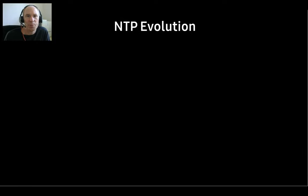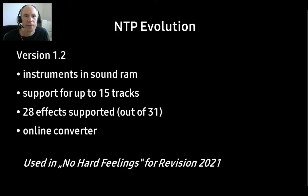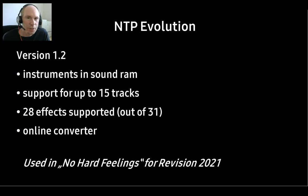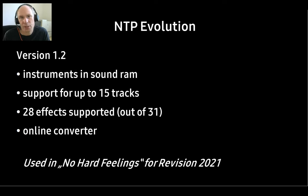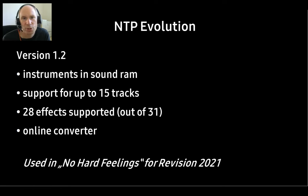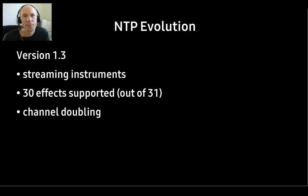Over the years, NTP changed quite a bit. Version 1.0 and 1.1 were the initial release and the bug-fixed version. 1.2 is what we used in our No Hard Feelings demo from 2021. Instruments could only be placed in sound RAM, which was good enough at the time, and it supported up to 15 tracks. One oscillator is used as a timer for reading music notes, leaving 31 oscillators. Since every track requires two oscillators, we ended up with 15 tracks. So for No Hard Feelings, our musician Dreamer created a module with 15 tracks. Streaming was an itch I finally managed to scratch in version 1.3.